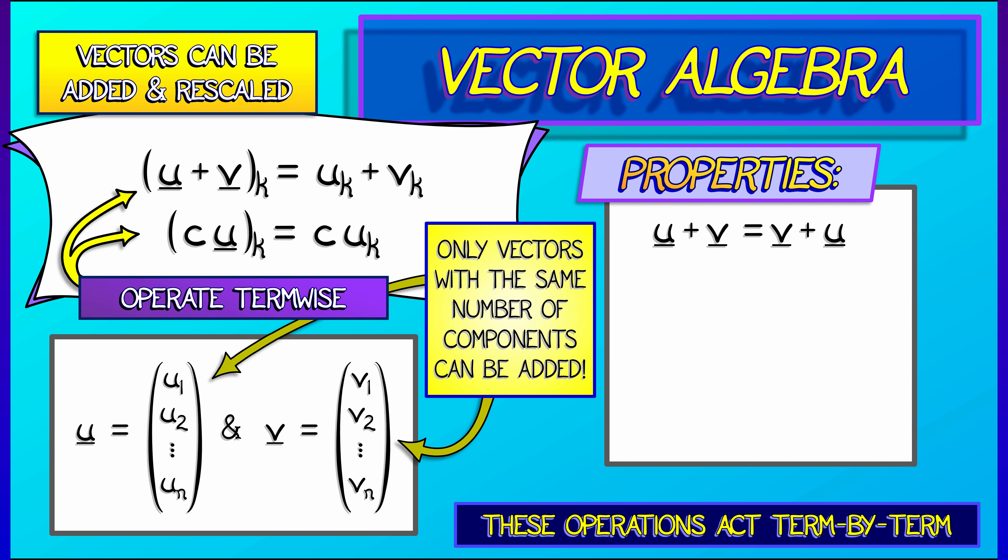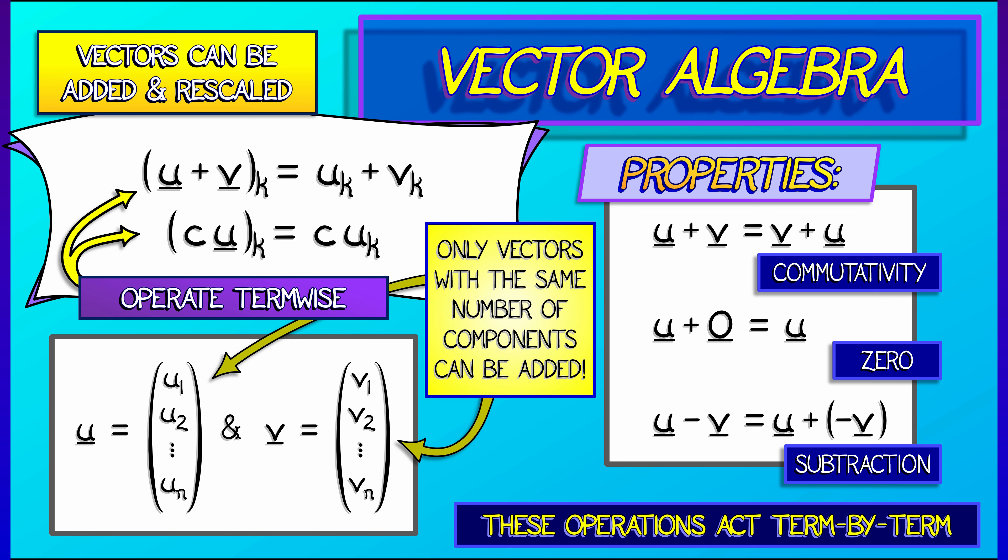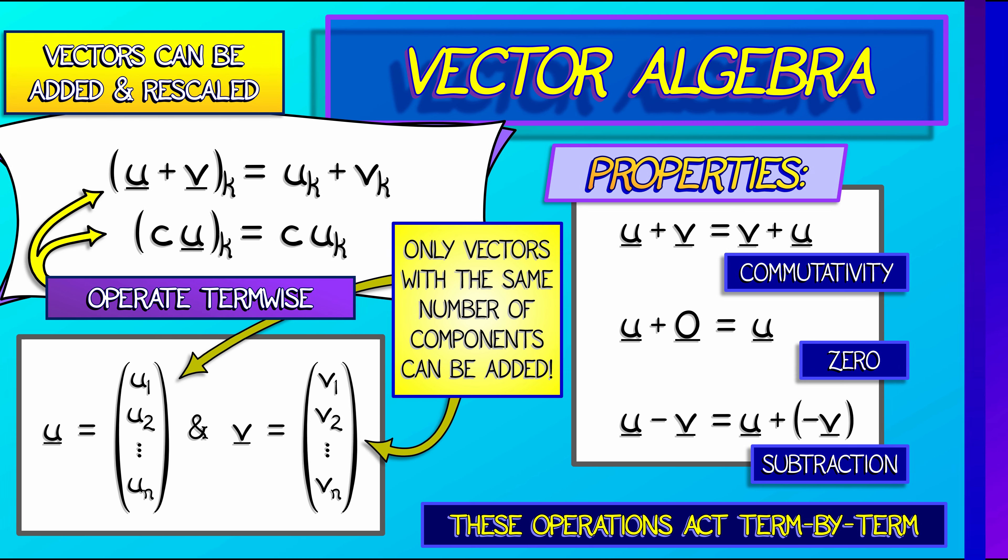Couple of properties. First, Vector Addition is commutative: u plus v equals v plus u. That's totally obvious. There's an identity, the zero vector—all components are zero—and that does nothing under Vector Addition. Finally, Vector Subtraction is defined by multiplying the second term by the constant negative one and then adding. So we've got Vector Addition, Subtraction, and Scalar Multiplication.